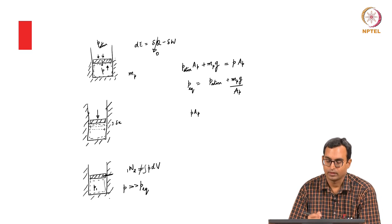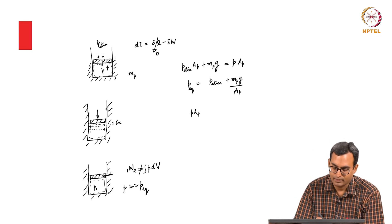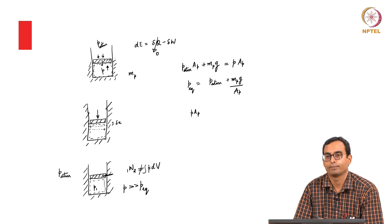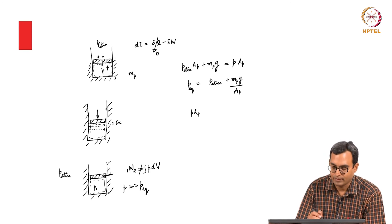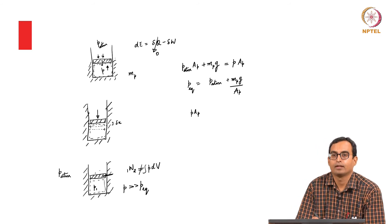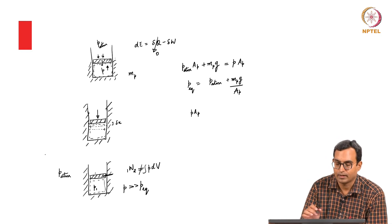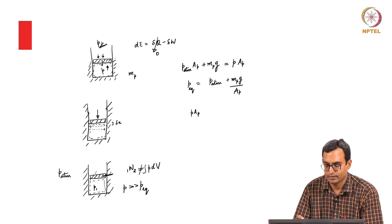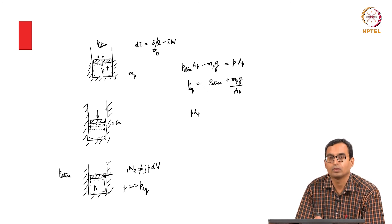So then the question is: how do we calculate the work done? In reality we cannot calculate it very accurately, but there are certain assumptions we can make. What we can assume, for example, is that the pressure far away remains atmospheric — which is possibly a good assumption. We can also assume with a little bit of error that the pressure on the outside of the piston also remains atmospheric. We know this is not strictly true: if the piston is accelerating and moving upward really fast, the pressure on the top surface will be slightly higher than atmospheric. But since the atmosphere is very large and we have no better way of calculating this, we assume the pressure outside is atmospheric.